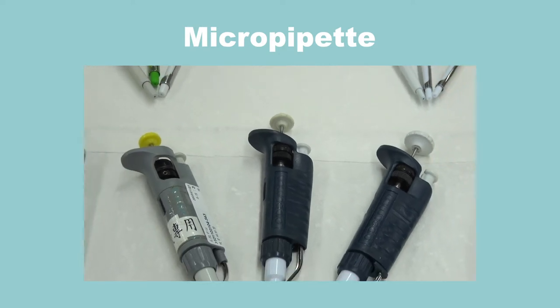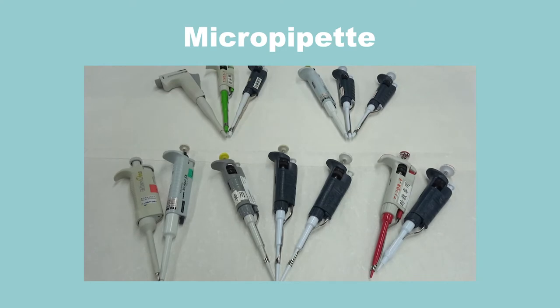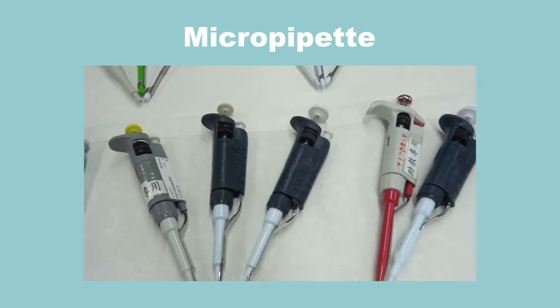The micropipette is used for aspirating solutions at the microliter scale. It is an essential tool for biochemistry experiments.